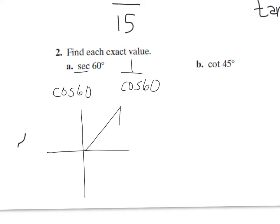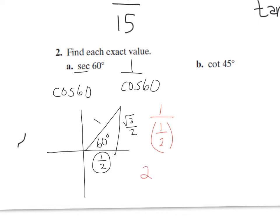The unit circle always has a radius of 1, the short side is 1 half, and the long side is root 3 over 2. So the cosine of 60 is 1 half, so this is going to be 1 over 1 half. And 1 over 1 half is 2 — it's positive 2. We're in the first quadrant, so it's positive 2.